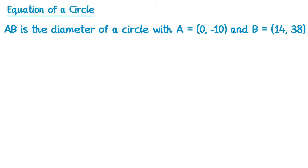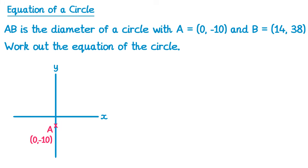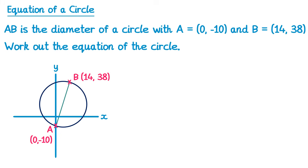For this question we're told AB is the diameter of a circle and we're given the coordinates of A and B, and we need to work out the equation of the circle. A is at (0, -10) and B is at (14, 38), and since AB is the diameter, we can find the center C by finding the midpoint of line AB.